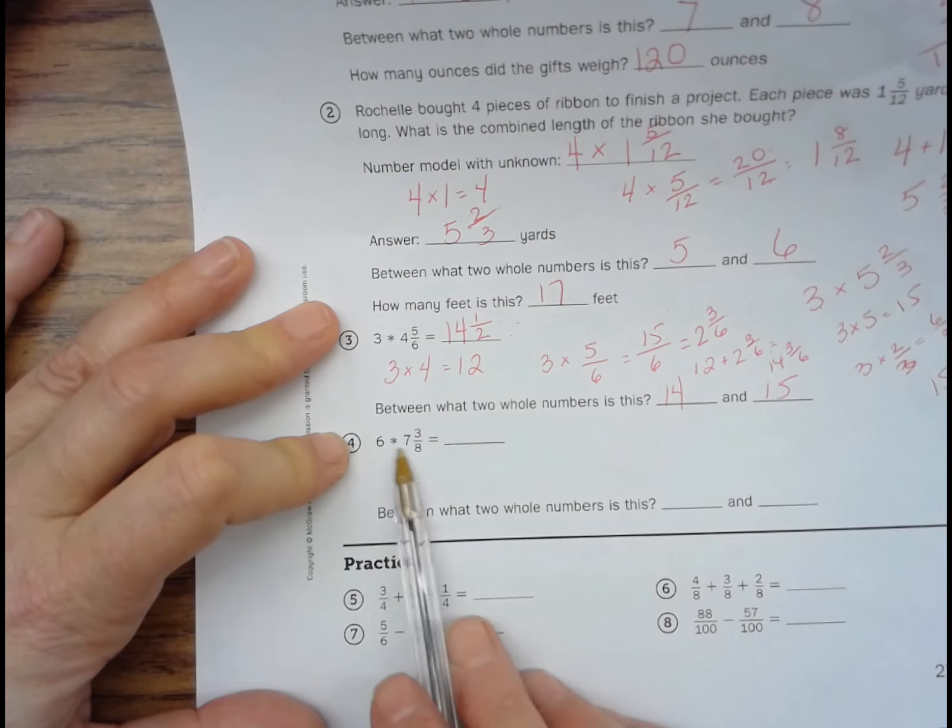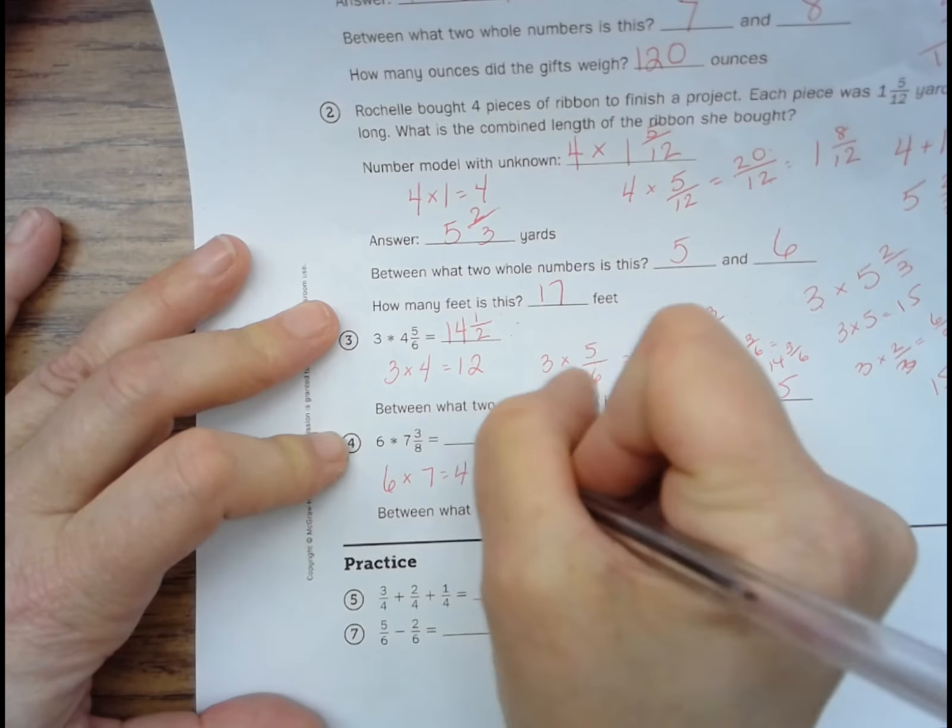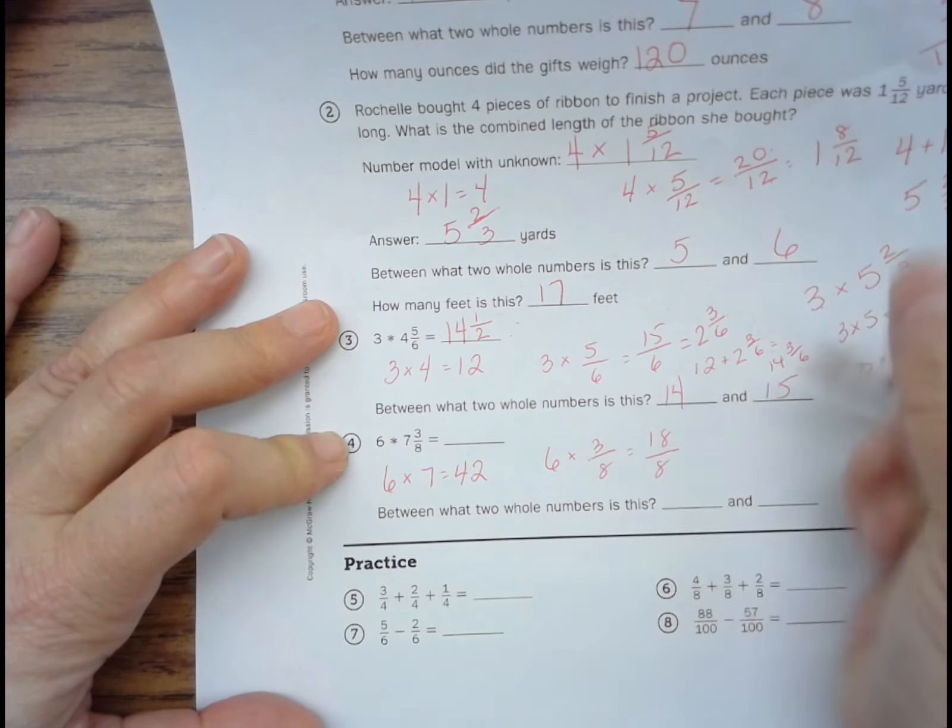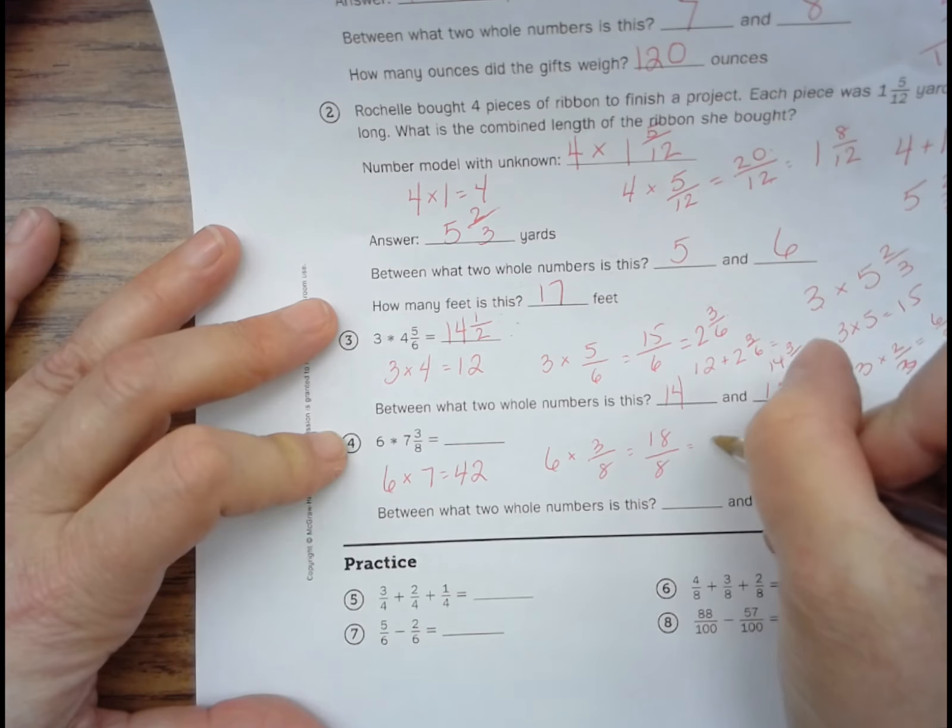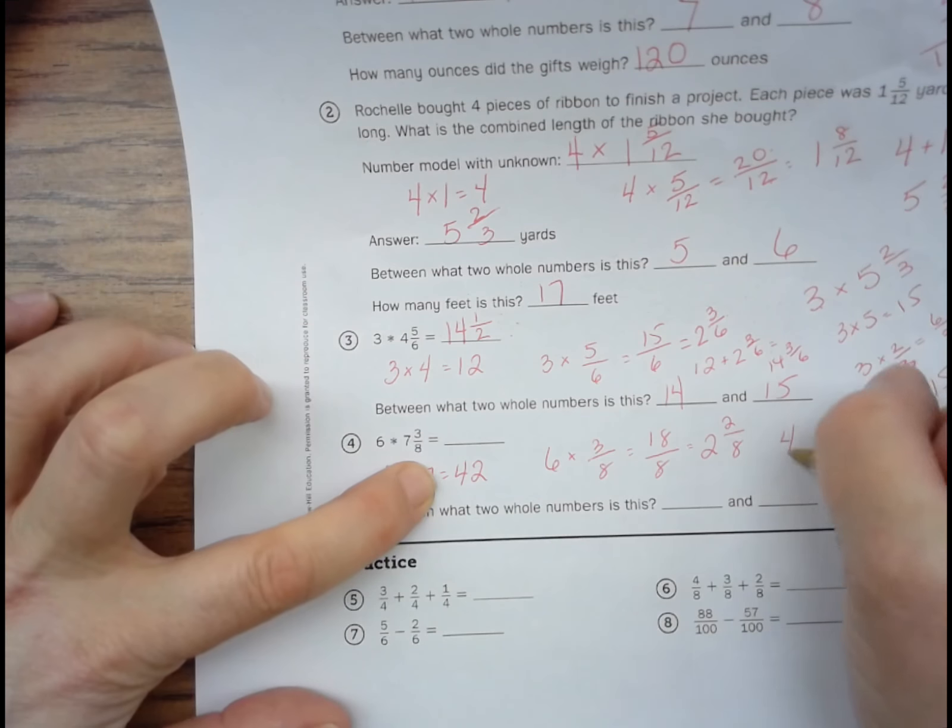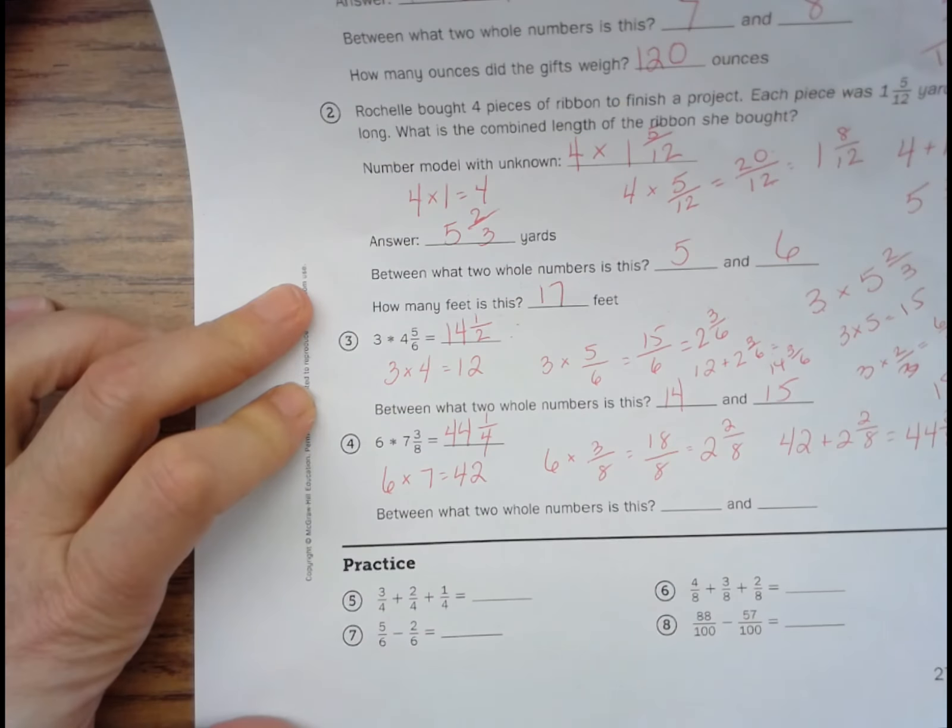And then our last one, six times seven and three-eighths. Six times seven is forty-two. Six times three-eighths is eighteen-eighths. Eight goes into eighteen two times with a remainder of two. And then forty-two plus two and two-eighths equals forty-four and two-eighths. And we can simplify that to forty-four and one-fourth. Between what two whole numbers is this? Forty-four and forty-five.